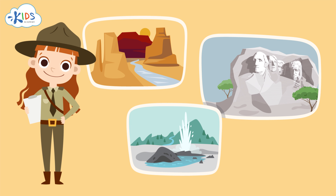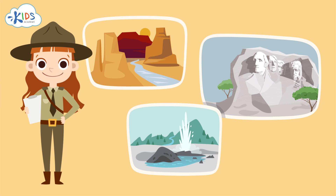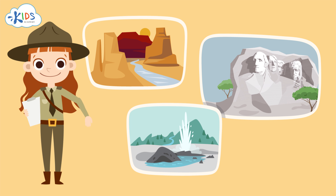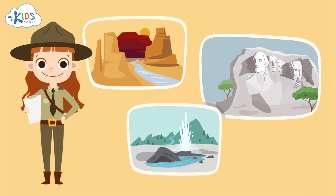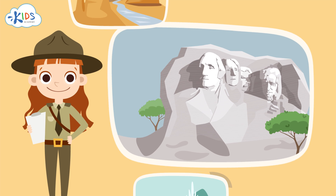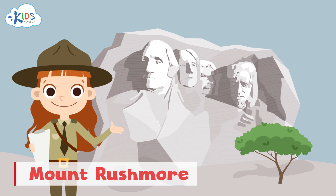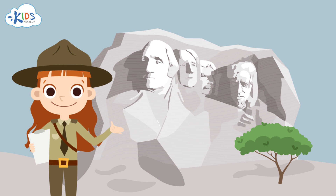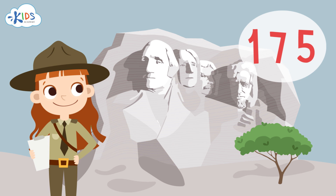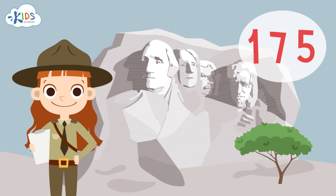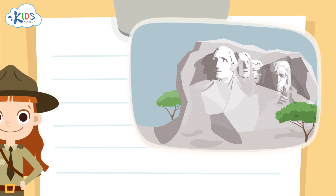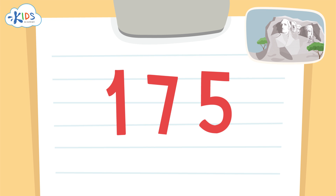Let's take a look at a real-life situation that requires rounding and see how our rounding to the nearest hundred skills can come in handy. This park ranger wants to record how many people visited these national landmarks by rounding to the nearest hundred. Let's help her by rounding. First we'll check out Mount Rushmore — one of my favorite landmarks. According to the data, 175 people have visited Mount Rushmore.